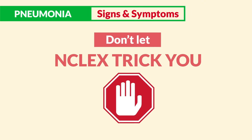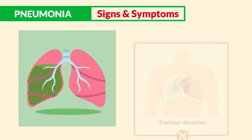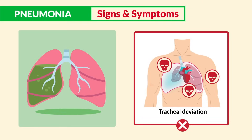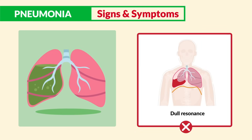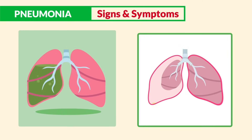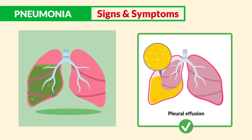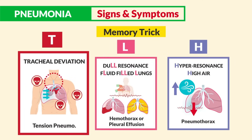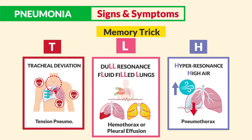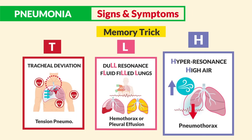Don't let the NCLEX trick you on select-all-that-apply questions. Pneumonia does not include tracheal deviation — that's typically from tension pneumothorax. It doesn't include hyperresonance, which is typical for a regular pneumothorax (air inside the pleural space), and it's not dull resonance, which is typical for hemothorax (blood inside the pleural space), but can also happen in fluid-filled spaces like a pleural effusion. Memory tricks: T for tracheal movement as T for tension pneumothorax; L's for dull resonance — think blood or fluid for hemothorax or pleural effusion; H for hyperresonance — just think high air.